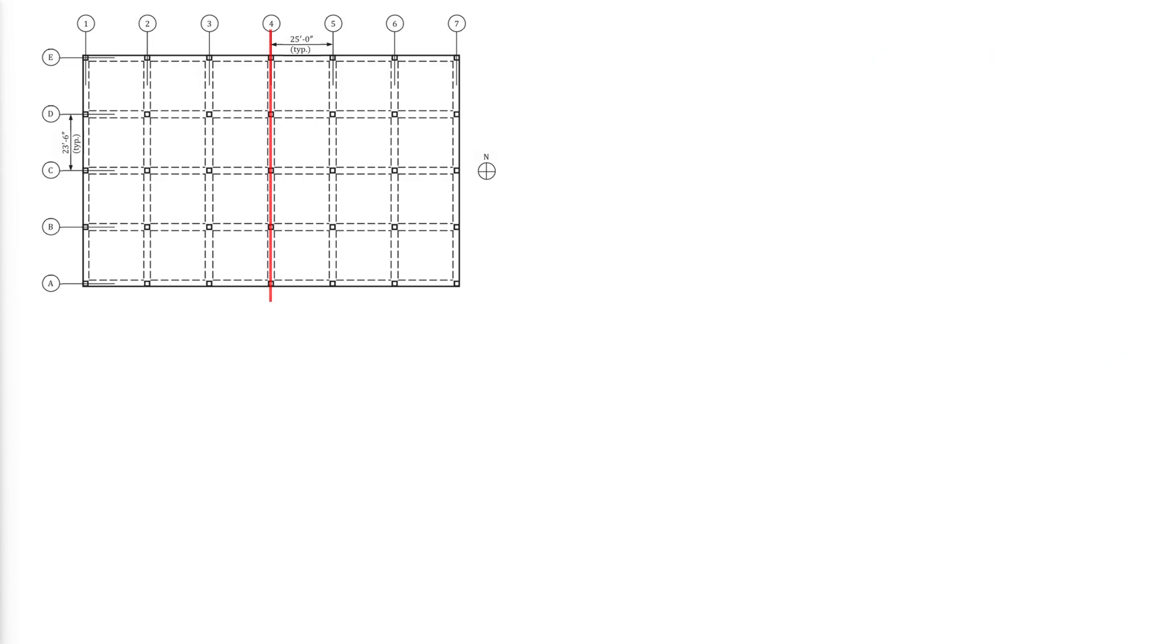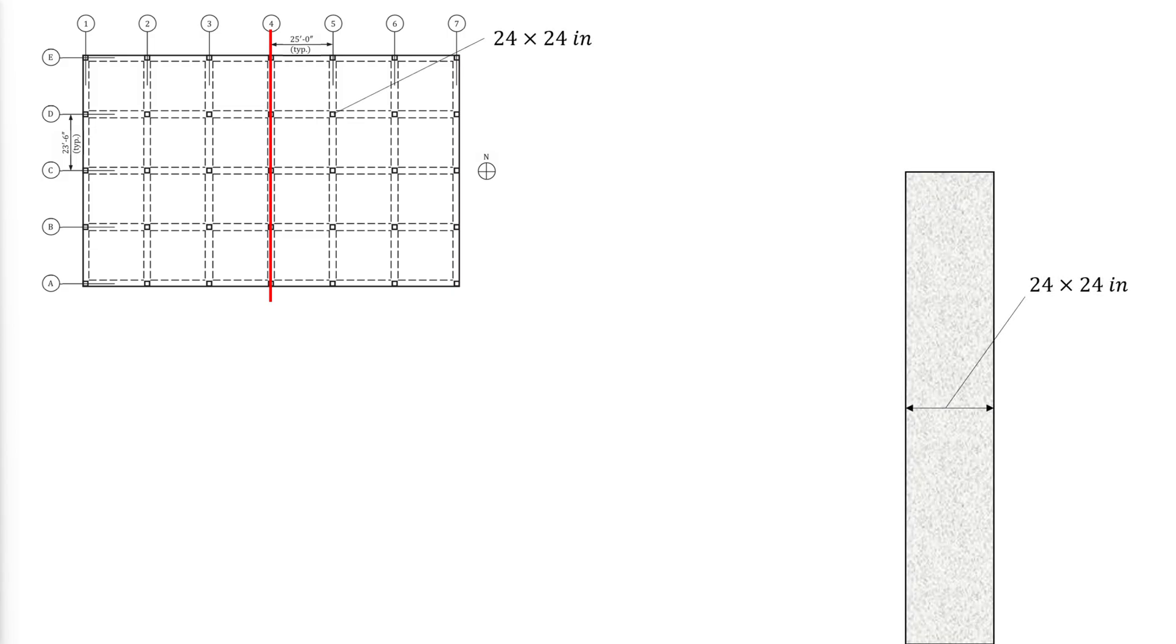Let us take the beam along line 4 of this building level and say that the columns are 24 by 24 inches each. Due to architectural requirements in this example, the depth of the beam has been chosen to be 24 inches and the slab thickness is 7 inches.